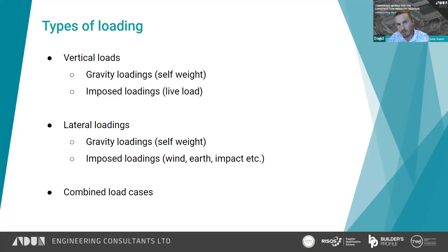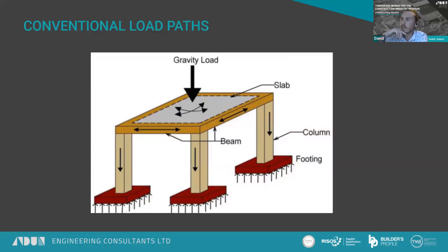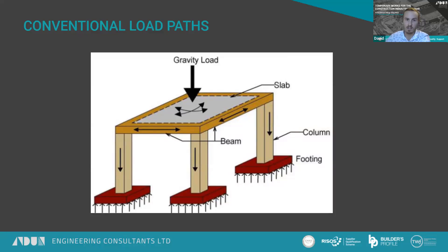These lateral loads will be transmitted down to the ground in a different way to your vertical loads. We also need to consider the combination of these loads and how that combination can act together to cause the worst-case loading on a structure. Looking at conventional load paths, the diagram shown is a pretty simple structure: a two-way spanning slab supported by beams which then transmit the load down through the columns to the foundations, where there is hopefully an equal and opposite reaction from the ground.